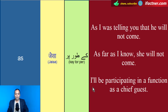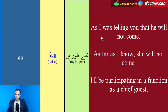Toh doostow, humnay dekha word 'as' ka meaning hota hai 'jaysa ke' ya 'toor peh'. Example sentences liye: 'As I was telling you that he will not come.' 'As far as I know, she will not come.' Aur 'I will be participating in a function as a chief guest.'